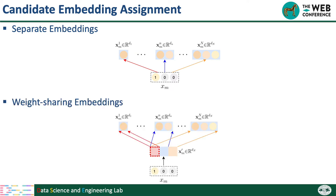To address this challenge, we propose weight-sharing embeddings. Here, we only assign one embedding for a given feature, and the candidate embeddings can share weights within this embedding. For example, the front parts (like the red parts) are shared by all candidates. This design reduces storage space and improves training efficiency. Also, because the front part has more chance to be retrieved and trained, it can capture more important information about the feature.